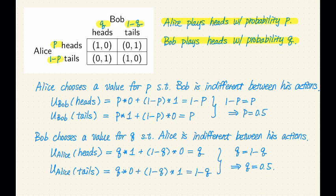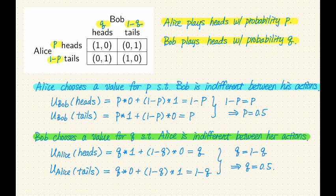What's the trick for deriving these probabilities? The rule is quite simple: one player chooses their mixing probabilities such that the other player is indifferent between their actions. So Alice chooses a value for p such that Bob is indifferent between his two actions, and Bob chooses a value for q such that Alice is indifferent between her two actions. Indifferent means that the expected utility of playing either action is the same for that player — Bob doesn't care which action he plays.